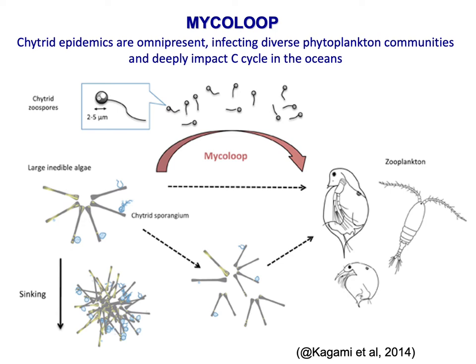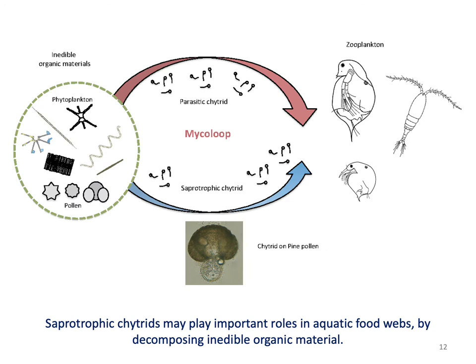Large colonies of phytoplankton may be fragmented by chytrid infections and become edible to zooplankton. On the other hand, infected host colonies may remain inedible to zooplankton due to aggregate formation of cells. Those aggregations may sink faster and affect material cycles. Many chytrids also behave as saprotrophs and play important roles in aquatic food webs by decomposing inedible organic materials and becoming food for zooplankton.